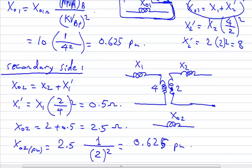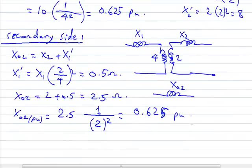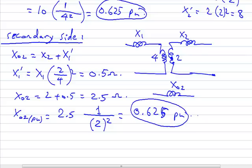From this example, it can be observed that the per unit reactance of the transformer referred to the primary side or to the secondary side is the same, even though their ohmic values are different. Thus, the per unit system eliminates the complexity of transformation ratios in transformers, making it a very useful technique in simplifying the calculation of power system performance.